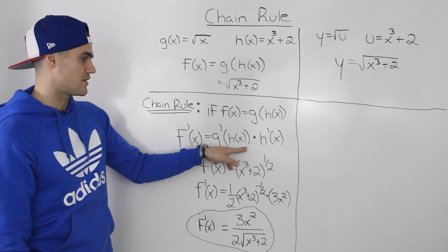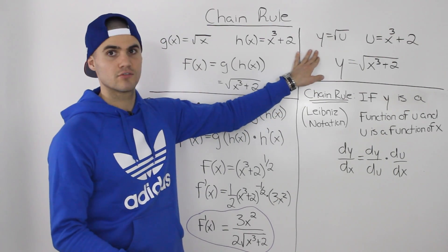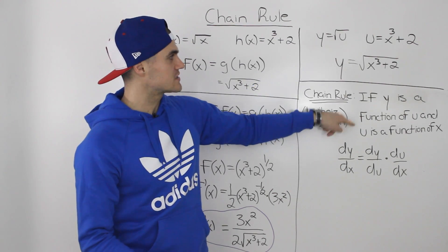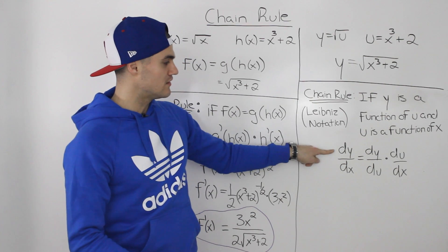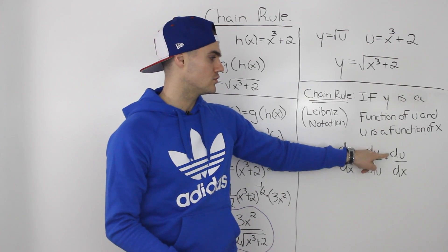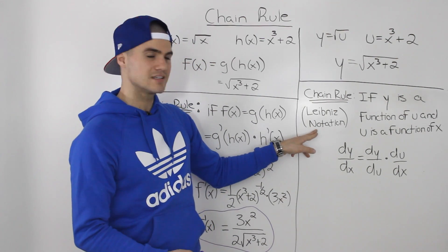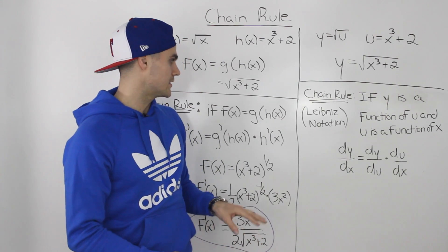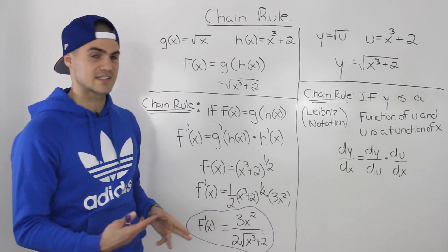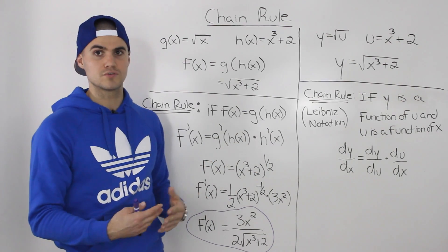Another way the chain rule can be presented is using Leibniz notation. If y is a function of u and u is a function of x, then dy by dx equals dy by du times du by dx. This is essentially another format for the same chain rule — both representations are equivalent, and you'll need to be comfortable using both.